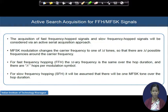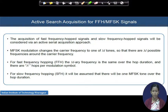We will discuss the active serial search acquisition process for both FFH and SFH MFSK. Remember, we will have correlators as well as integrate-and-dump receivers — multipliers, integrate-and-dump receivers, and non-coherent envelope detectors are expected to be present in the signal path, rather than the matched filter architecture which is a passive device. Let us first revisit the fundamentals of the FFH MFSK system.